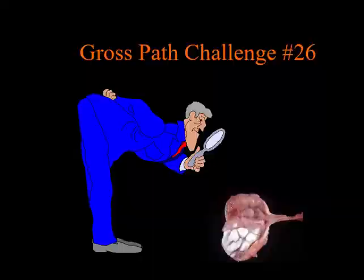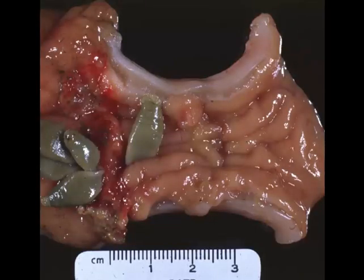Tissue number one is tissue from a horse. I would like the location, and I would like the name of the agent. Okay, time's up.